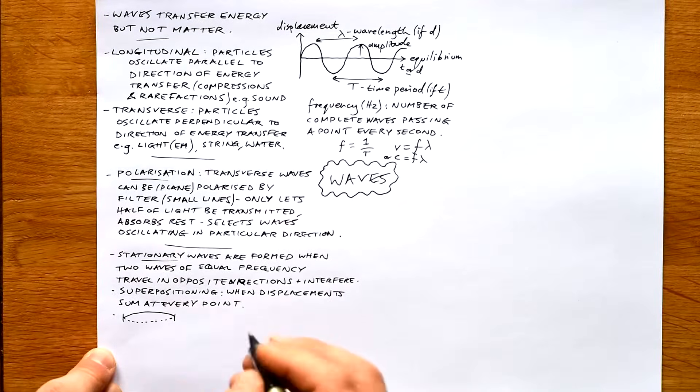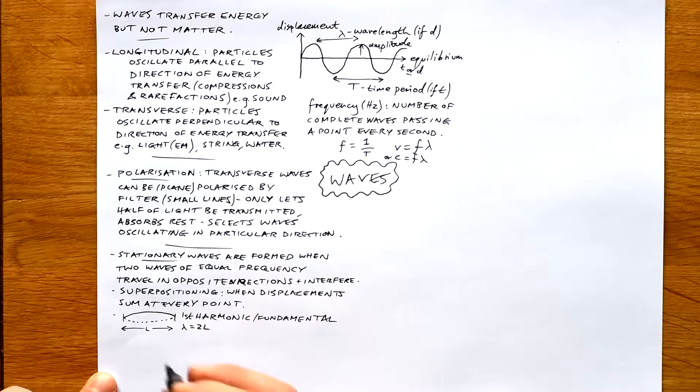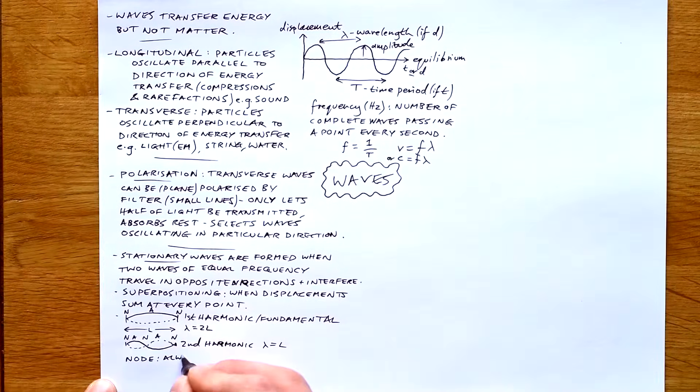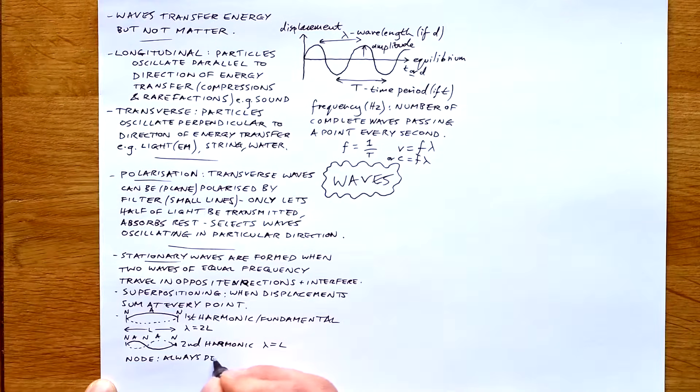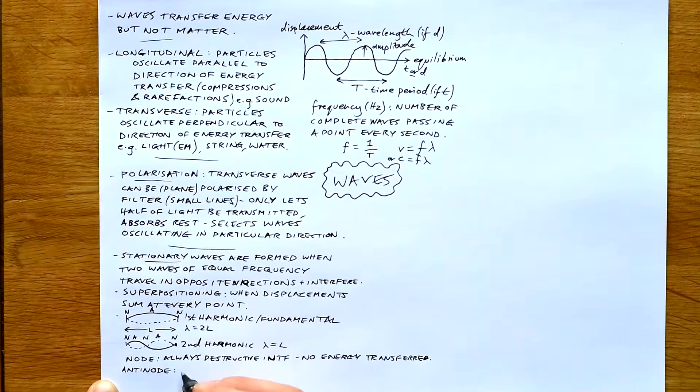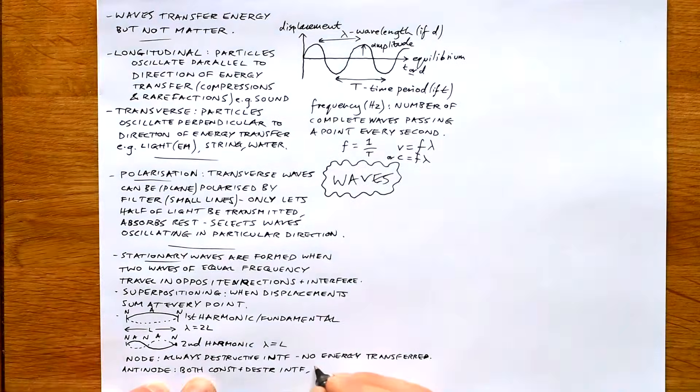On a piece of string, this is what we call the first harmonic, and this is when the wavelength is equal to two lots of the length of the string. Draw the second harmonic as well, when the wavelength is equal to the length of the string. At a node, always destructive interference - no energy transferred at these points. At an antinode we have both constructive and destructive interference, but energy is transferred because the string is actually moving.